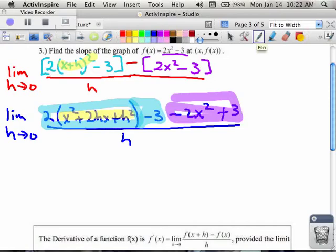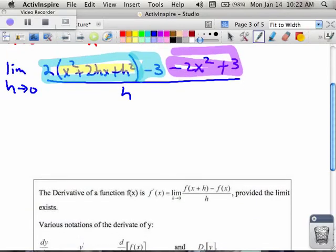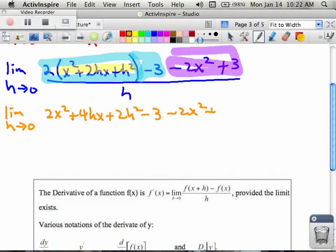I still have to simplify just a little bit because the 2 is on the outside of the parentheses. So as I simplify, I'm going to have the limit as h is turning into zero. On the top, I get 2x squared plus 4hx plus 2h squared minus 3 minus 2x squared plus 3 all over h.